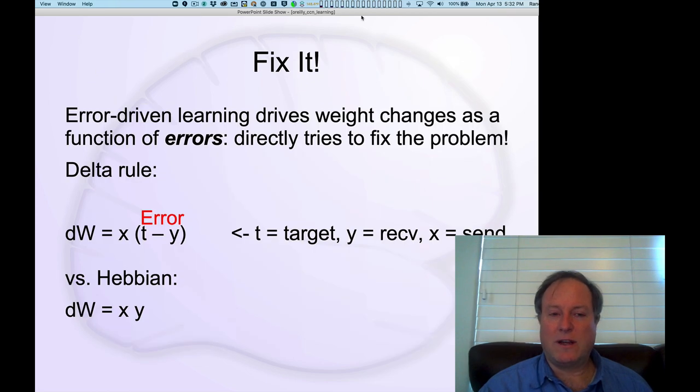This is captured in the core idea called the Delta Rule, also developed by Widrow and Hoff in the 60s. The idea is simply that the change in synaptic weight is proportional to the sending activity times the difference between the target value you should have produced and the actual activation value you did produce. This is the error. You're changing your weights directly as a function of the error that you made.